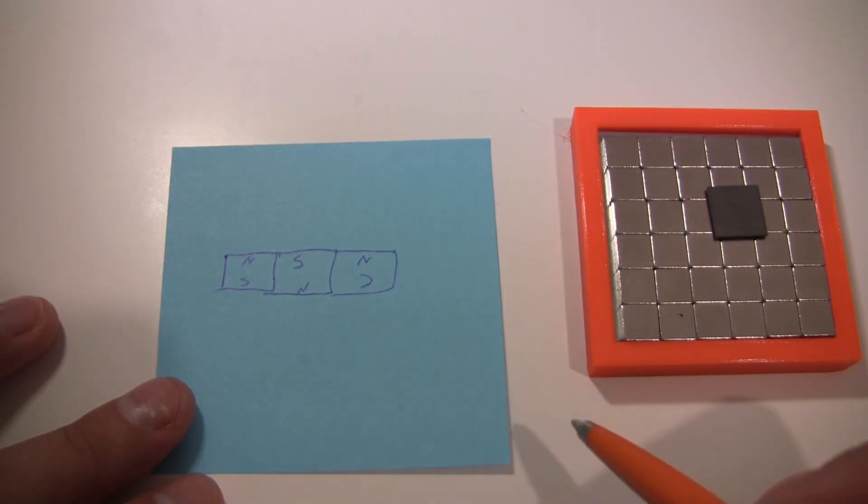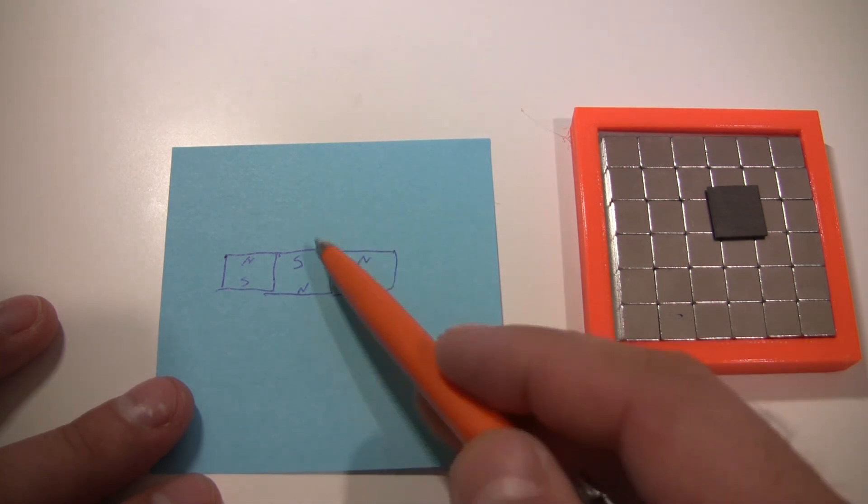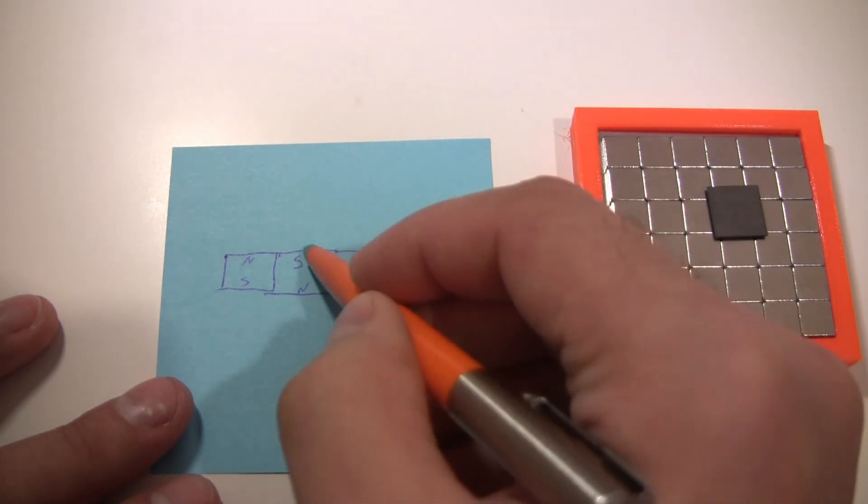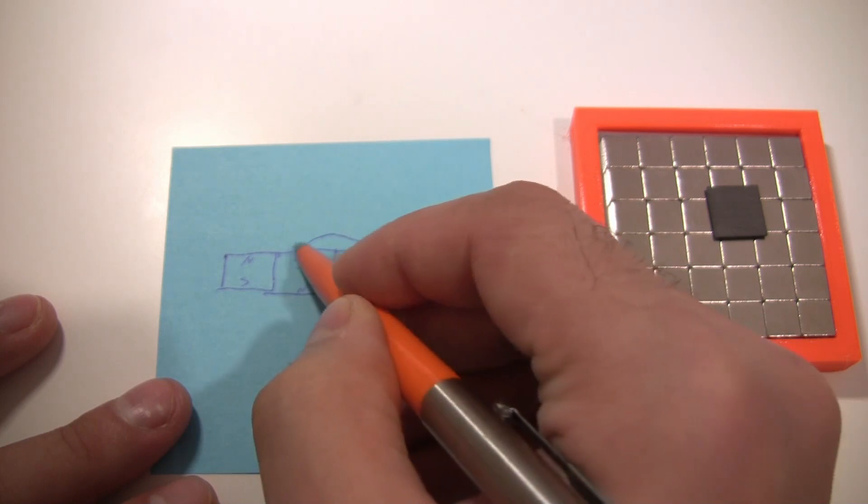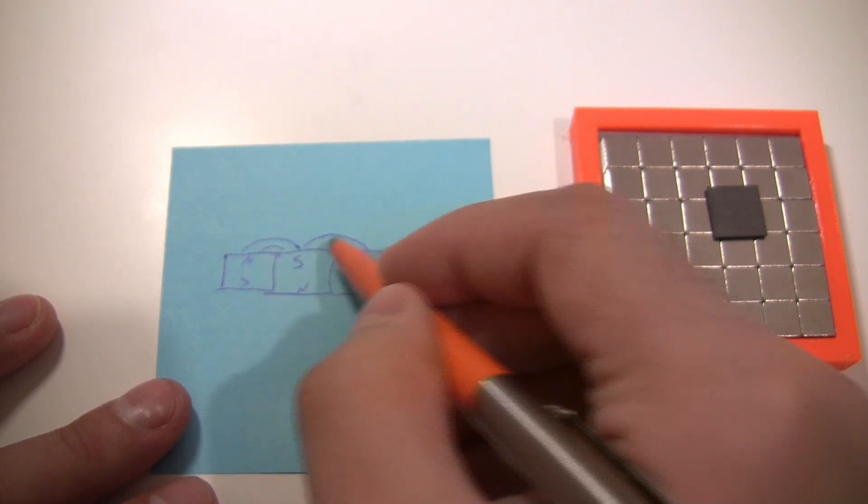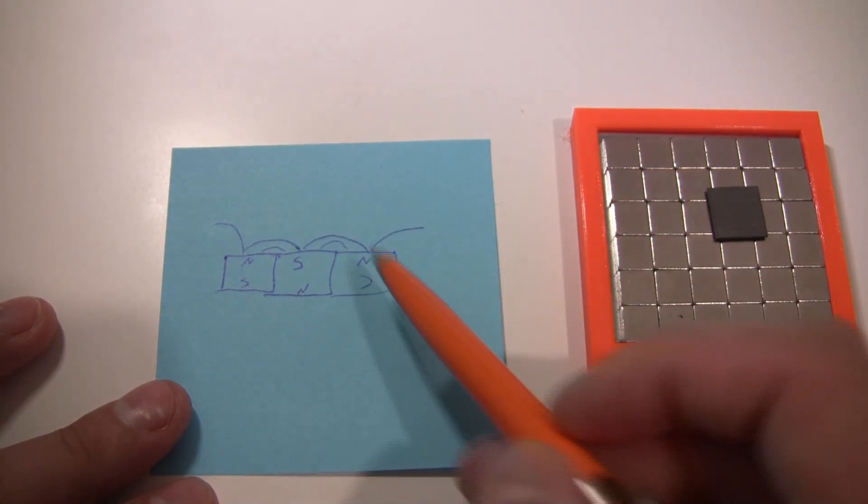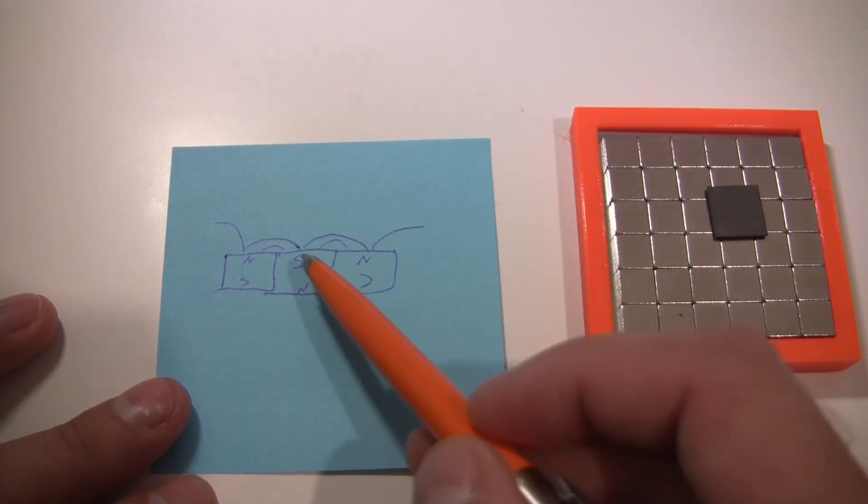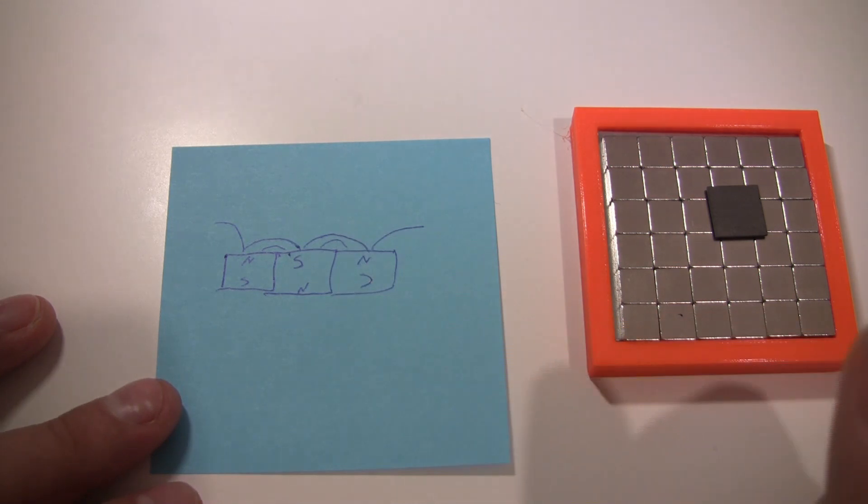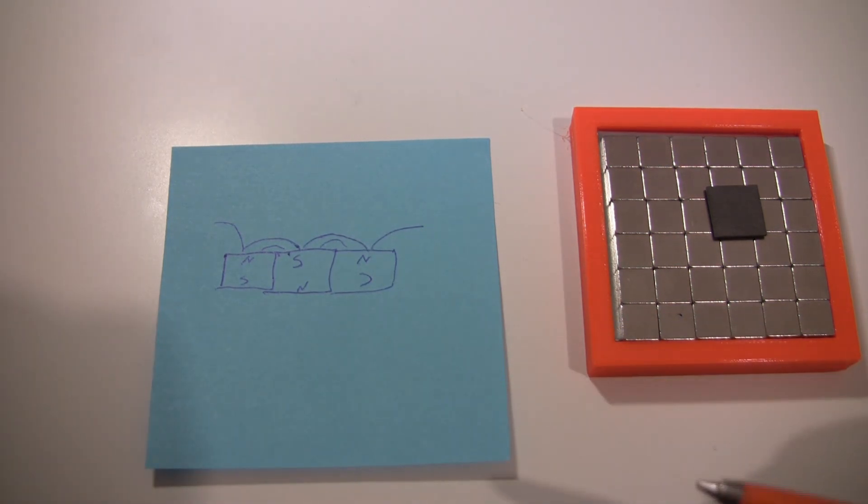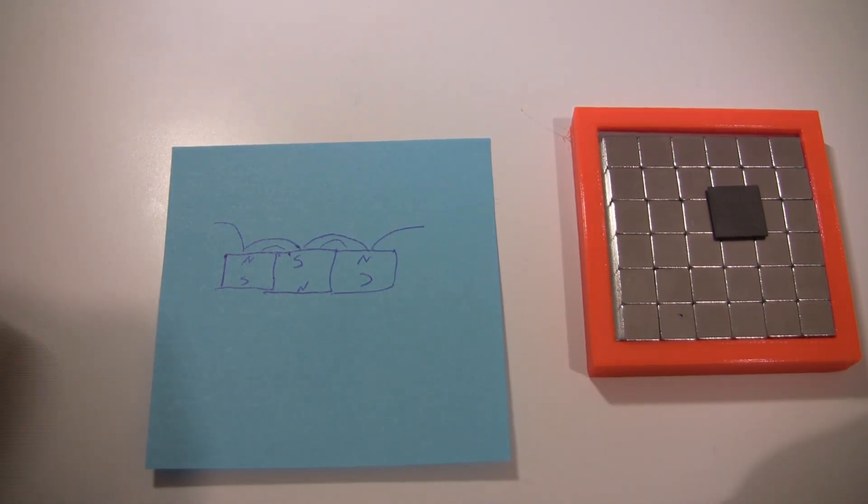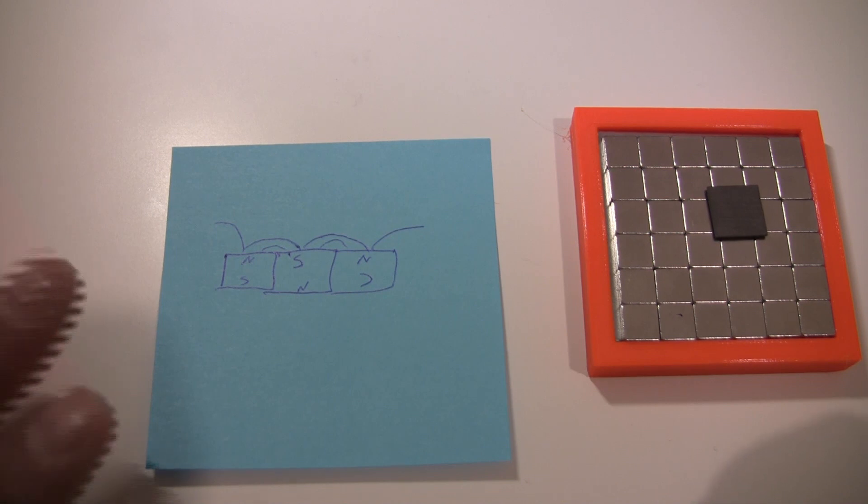So what that means is the field lines are going to be—bear in mind this is mirrored top and bottom while I draw the top to illustrate it. So we're going to have field lines coming out somewhat like this, and obviously going out the other magnets in the array. Now, bearing in mind that magnetic field lines are completely man-made constructs to describe a continuous vector field, they do help us illustrate what's going on here.